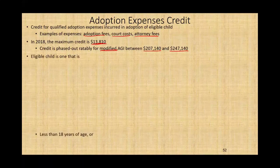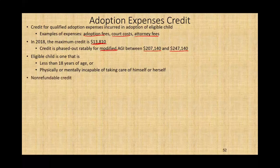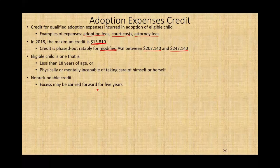What is an eligible child? A child that is less than 18 years of age, or physically or mentally incapable of taking care of him or herself. The credit is non-refundable, meaning if you don't have a tax liability you cannot take it, but any excess may be carried over for five years — just like the foreign tax credit, you can carry it forward for five years.